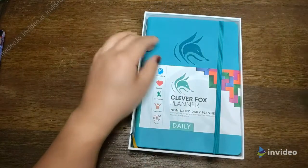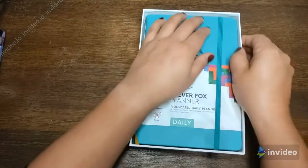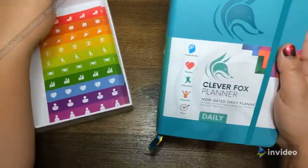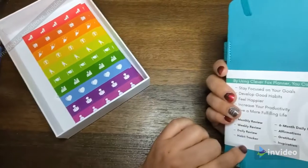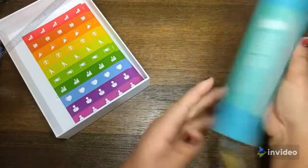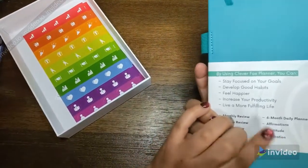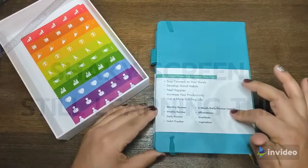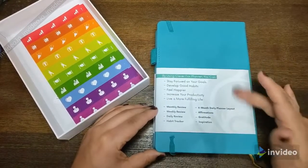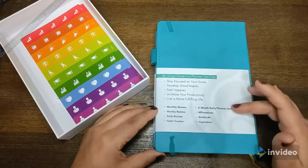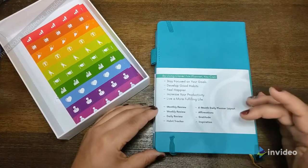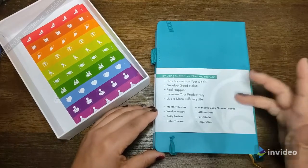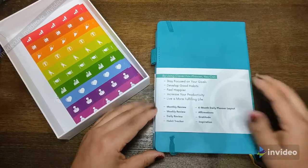Then you have the planner itself. I chose teal, it's one of my favorite colors. It's pretty thick and this is dated and it's only six months, so it's pretty thick because you have a page for each day. One of the other things that attracted me was I tend to use a planner for a little while, it doesn't really work for me. I like the fact that it's only six months, so if for some reason it's not making me excited, I can not feel too bad that I am switching to a different planner.